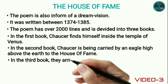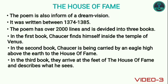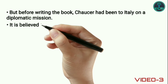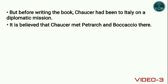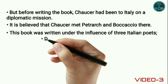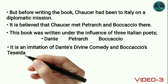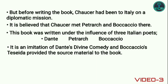In the third book, they arrive at the House of Fame and Chaucer describes what he sees. Before writing the book, Chaucer had been to Italy on a diplomatic mission. It is believed that Chaucer met Petrarch and Boccaccio there. This book was written under the influence of three Italian poets — Dante, Petrarch, and Boccaccio. It is an imitation of Dante's Divine Comedy, and Boccaccio's Teseida provided the source material to the book.